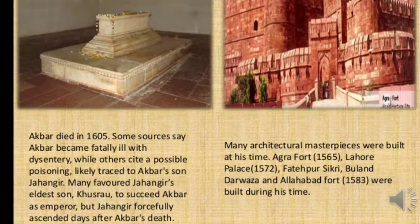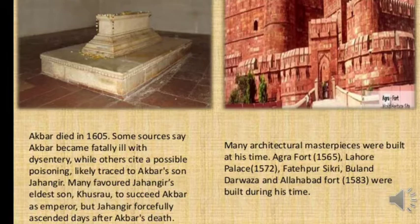When Akbar died in 1605, it was said he was fatally ill with dysentery. Many favoured his grandson Khushrao to succeed the Mughal throne, but Jahangir forcefully ascended the throne after Akbar's death. Many architectural masterpieces were built during Akbar's reign: Agra Fort in 1565, Lahore Palace in 1572, Fatehpur Sikri, Buland Darwaza, and Allahabad Fort in 1583.